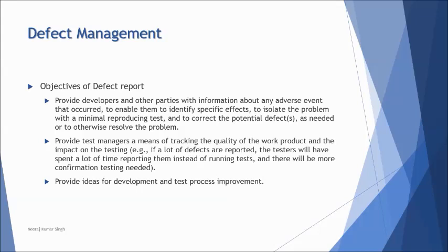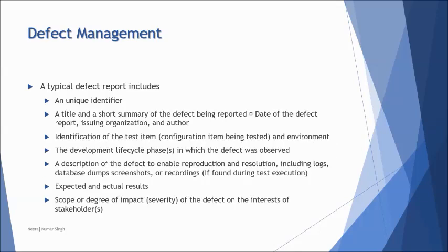The next topic covers what a defect report should generally include. This is a standard template — you can have more or less depending on your organization. It includes: a unique identifier, a title and short summary, the date reported, the issuing organization (development, requirements, or testing team), the author who reported the defect, identification of the test item and environment, the development life cycle phase in which it was detected, and a description to enable reproduction with expected and actual results.